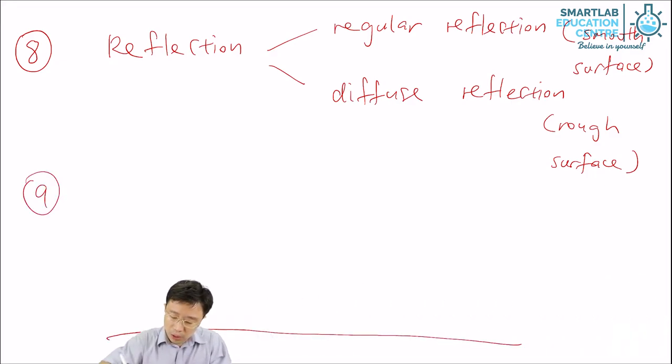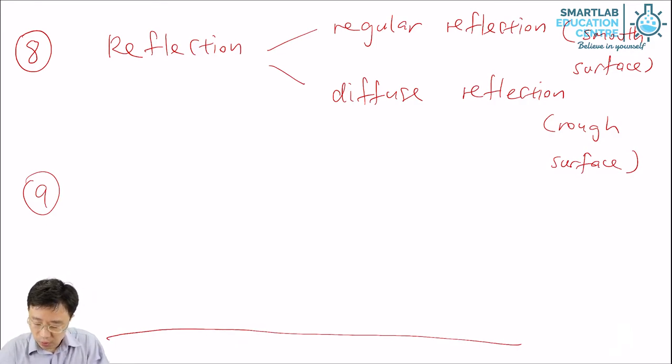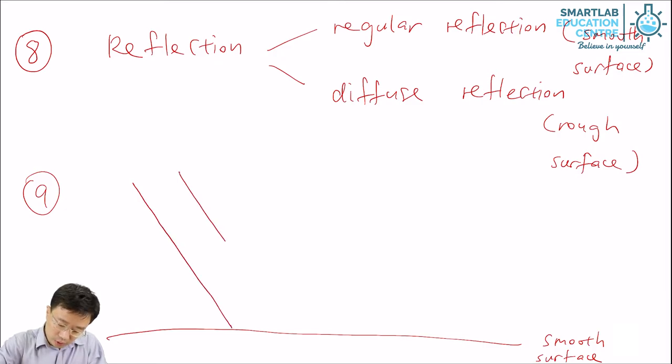So pictorially, how does it look like? If you have a smooth surface and you have a beam of light made up of parallel rays that hits the smooth surface.